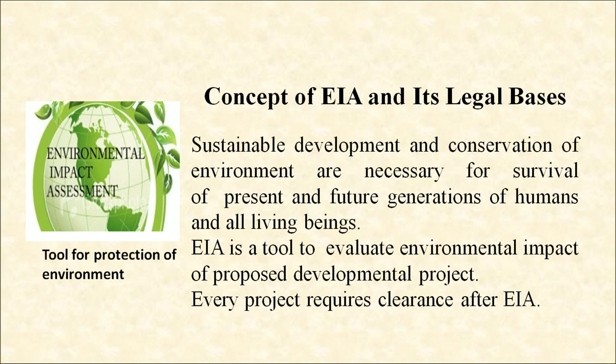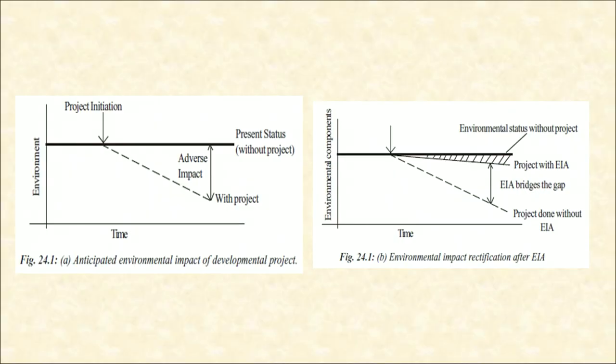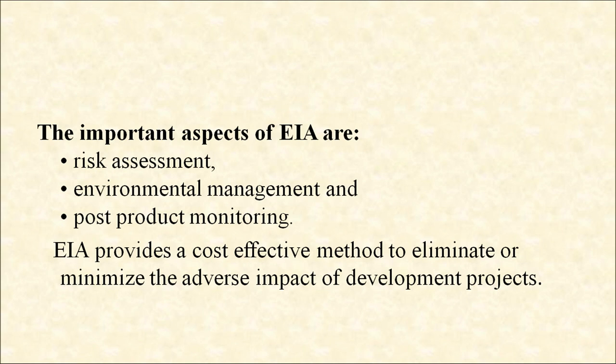Now, the concept of EIA and its legal basis. Sustainable development and conservation of environment are necessary for the survival of present and future generations of humans and all living beings. EIA is a tool to evaluate the environmental impact of a proposed developmental project. Every project requires clearance after EIA. EIA improves decision making for environmentally sound projects. EIA takes into account the ecosystem's assimilation and regeneration capacities for any new developmental project. Environmental clearance through EIA is mandatory. This figure shows anticipated environmental impact of a developmental project on the left side, and environmental impact rectification after EIA on the right side. The important aspects of EIA are risk assessment, environmental management and post-project monitoring.